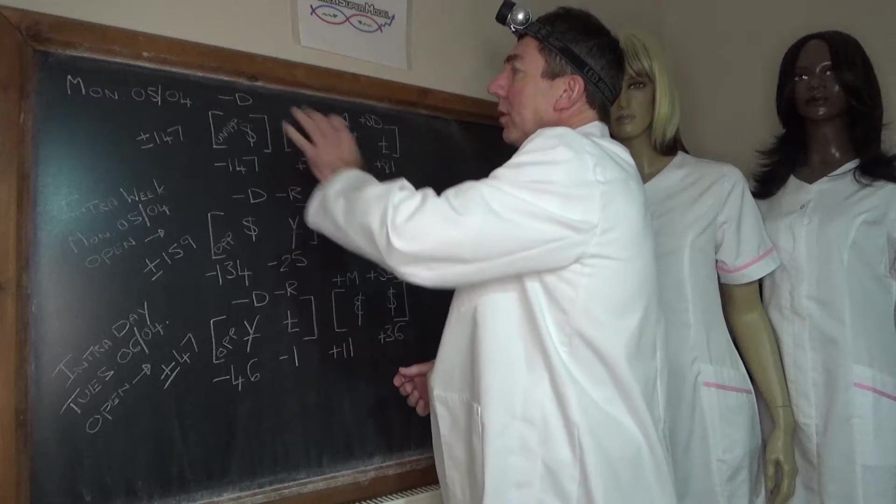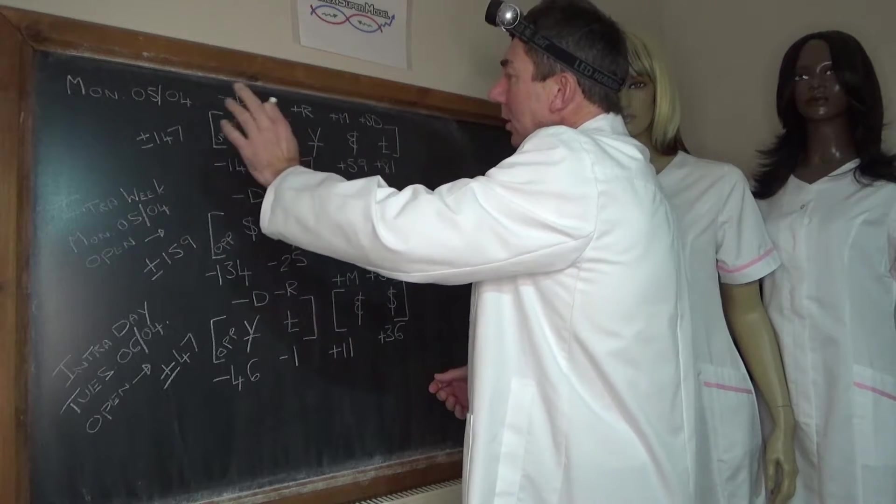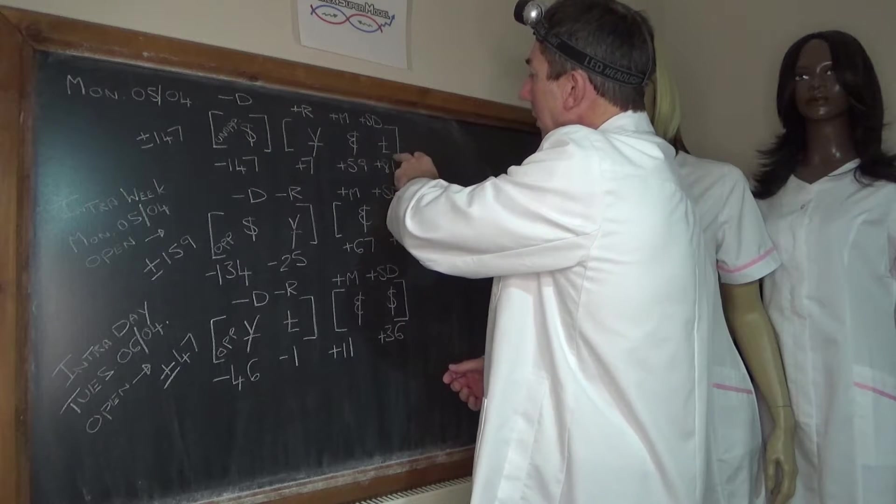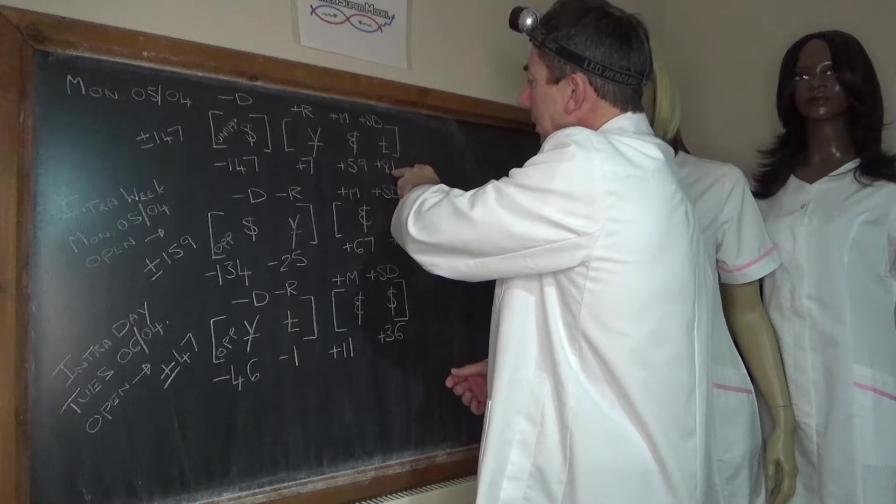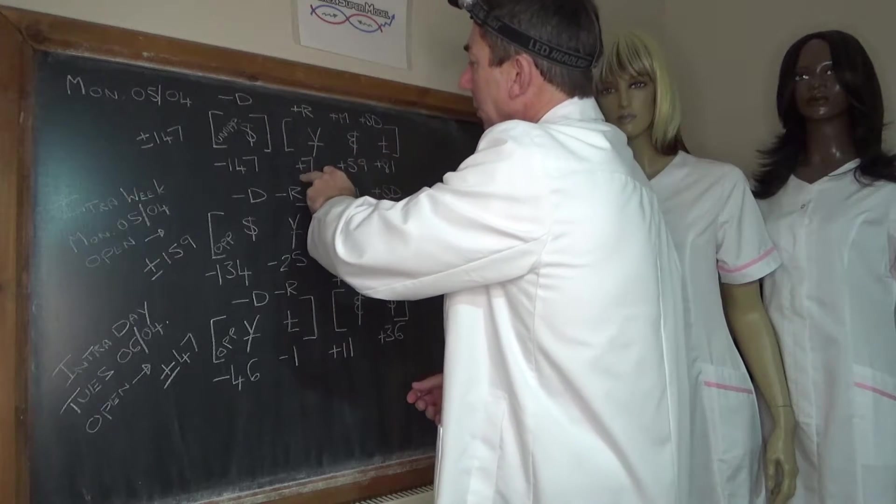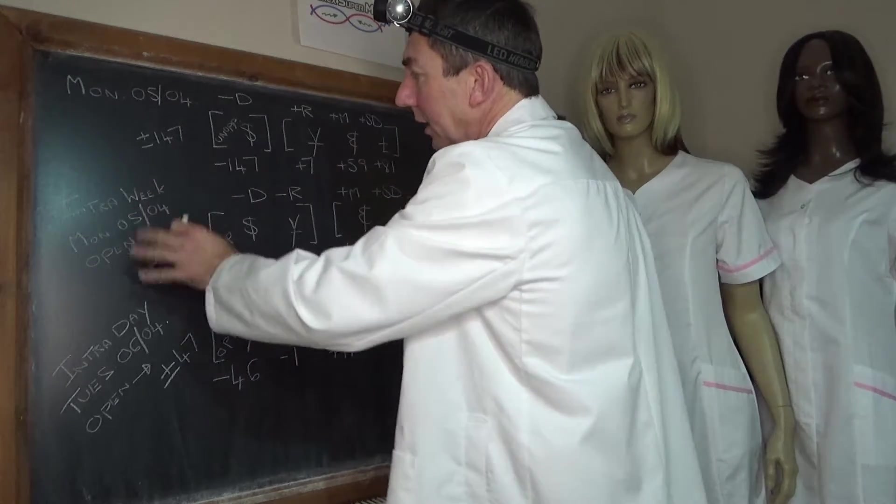Yesterday, Monday the 5th, we had an unopposed negative driver in the dollar, so no backdoor flows. The opposing positive flows were going predominantly into the pound at plus 81, Euro plus 59, and the Yen was the positive rock at plus 7, activity plus or minus 147.